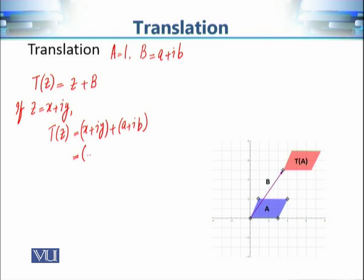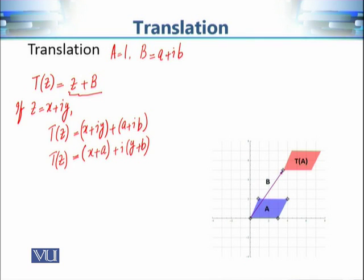Collecting the real and imaginary parts, the expression becomes (x + a) + i(y + b). This gives us the real and imaginary parts of this complex-valued function. Geometrically, when we apply T on a complex variable z we are adding the fixed complex number b. Representing b as a vector in the complex plane, applying T on z means translating z through this vector b.